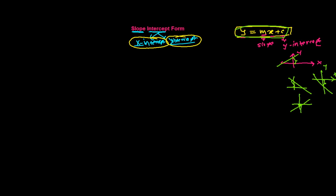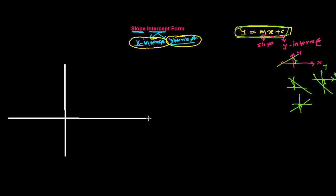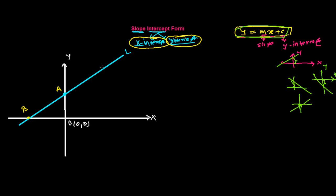Now let's derive this form of equation. I'll draw a figure: this is the y-axis, this is the x-axis, and the origin is (0, 0). Suppose a line L cuts the y-axis at point A and let P (x, y) be the general point on line L. Any values of x and y substituted into the equation of line L will satisfy it.